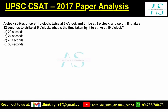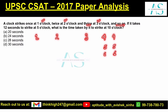A clock strikes once at 1 o'clock, twice at 2 o'clock, thrice at 3 o'clock and so on. Meaning, 4 times at 4 o'clock, 5 times at 5 o'clock, 6 times at 6 o'clock. And if I say 11 o'clock, it will strike 11 times at 11 o'clock.